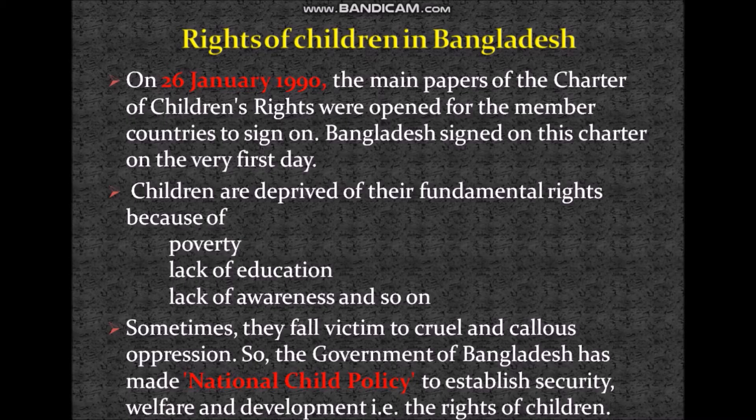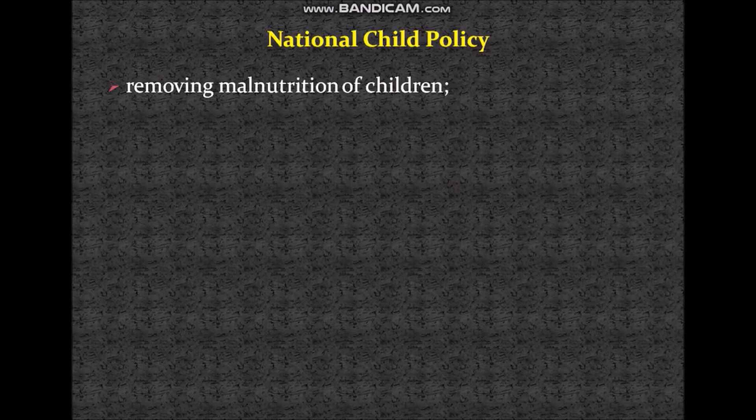Here is a new word: callous. It means very cruel — heartless or very cruel. Now, the question is, why did Bangladesh need to make a national child policy? We already know children are deprived of their fundamental rights for some reasons. That's why Bangladesh has made a national child policy to establish security, welfare, and development. Now we are going to learn about those policies Bangladesh has made. The first one is removing malnutrition of children. The second is ensuring health for all children.